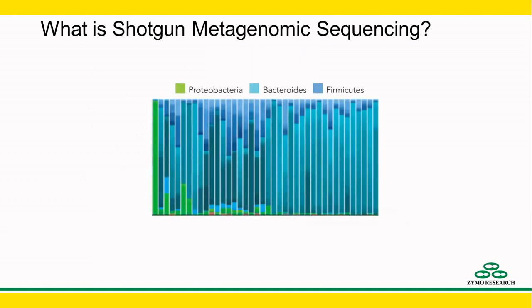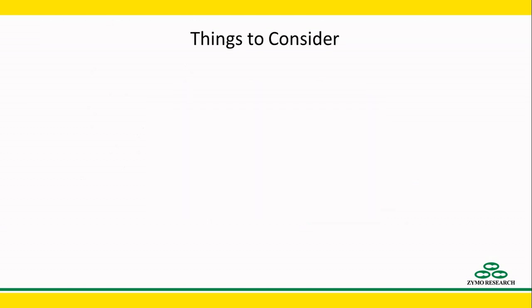Because shotgun metagenomic sequencing covers all genetic information in a sample, the data can be used for additional analyses, such as metagenomic assembly and binning, metabolic function profiling, and antibiotic resistance gene profiling. As I mentioned earlier, there are many factors to consider when comparing these two sequencing strategies, including your sample type and the coverage needed for bacteria.